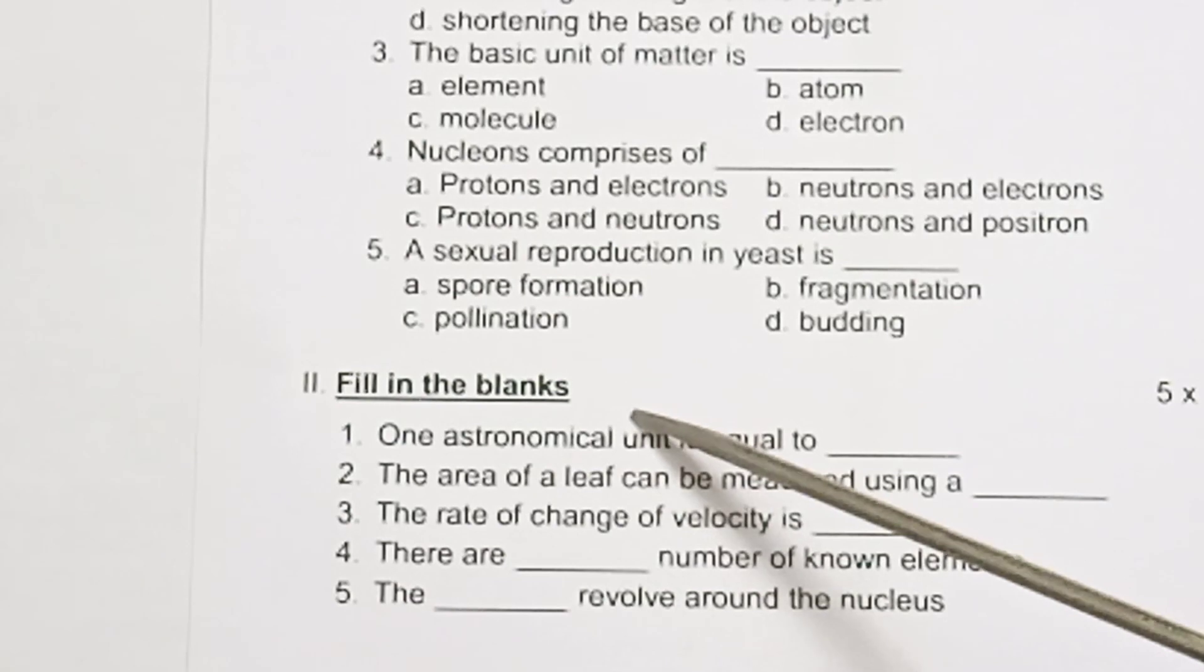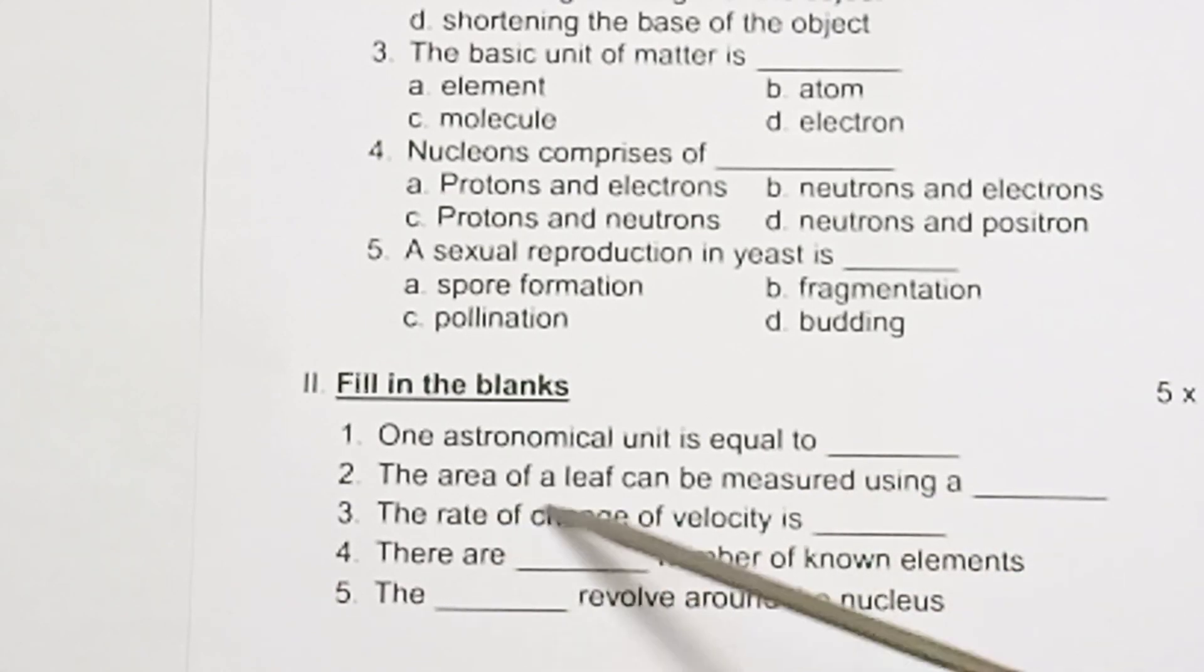Format 2: Fill in the blanks, 5 into 1 equals 5. One astronomical unit is equal to blank. The area of leaf can be measured using a blank. The rate of change of velocity is blank. There are blank number of known elements. The blank revolves around the nucleus.